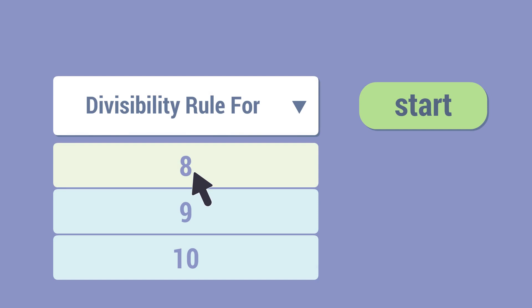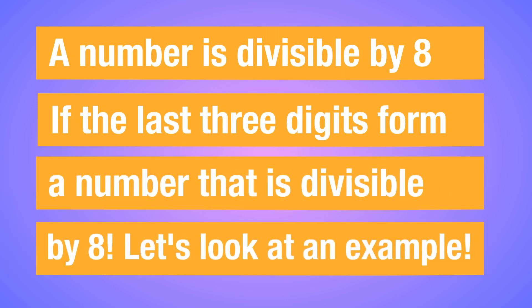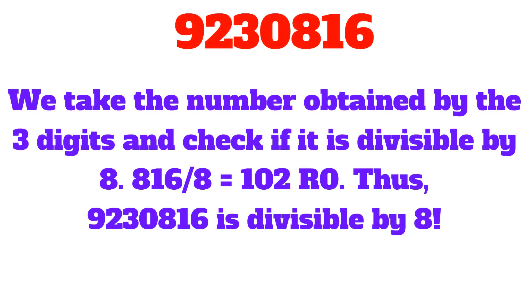Here is the divisibility rule for 8. A number is divisible by 8 if the last 3 digits form a number that is divisible by 8. For example, take 9,230,816. We take the number formed by the last 3 digits, which is 816. Since 816 divided by 8 gives us 102 with a remainder of 0, this number is divisible by 8.